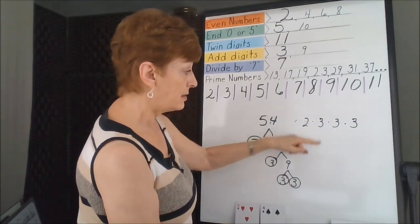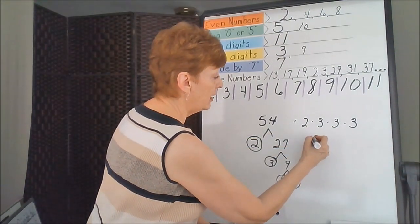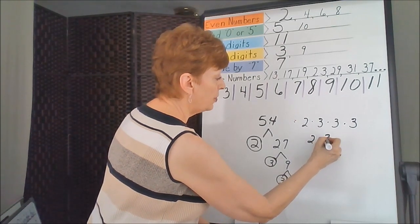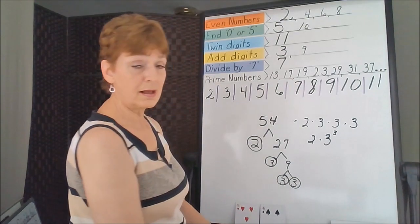I have three 3s. So the prime factorization, more sophisticatedly, is 2 times 3 to the power of 3. I have three 3s, so my exponent is also 3.